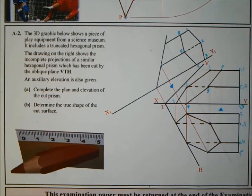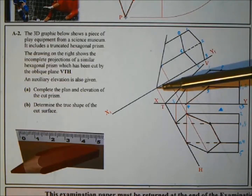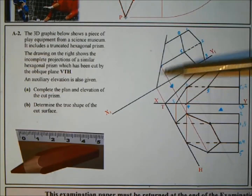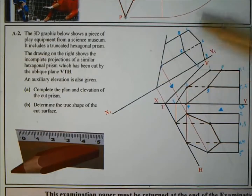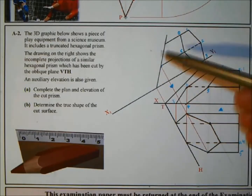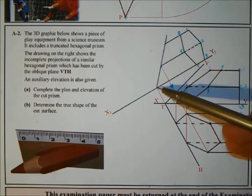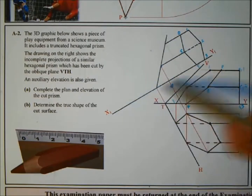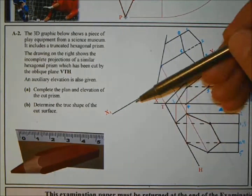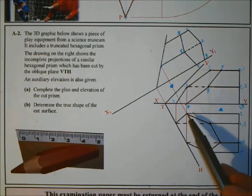Part B: determine the true shape of the cut surface. We need an edge view of that cut surface. The oblique plane is cutting through here, and that edge view is the cut surface. To get the true shape, we're going to rotate the two heights around this point to bring them down parallel to the XY line, check them back at the same angle as the horizontal trace, and then project our five or six points.